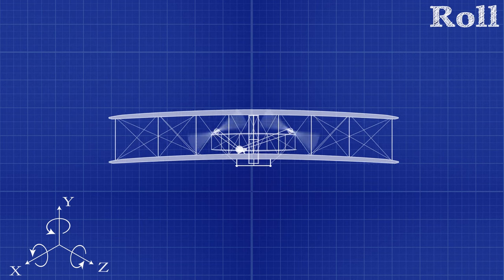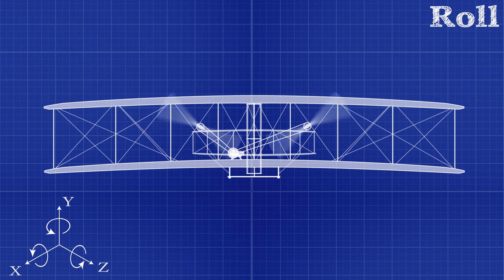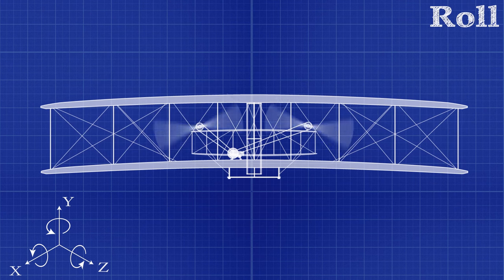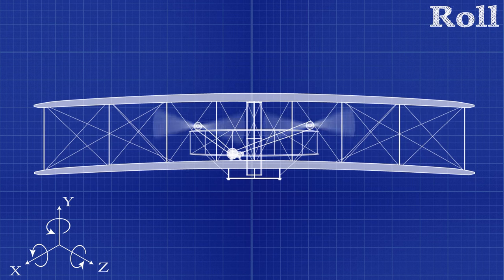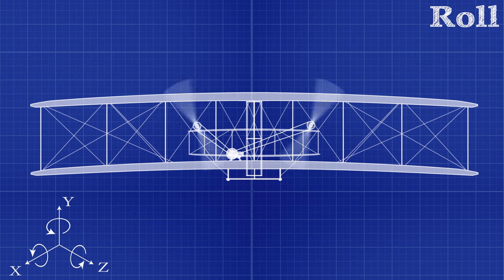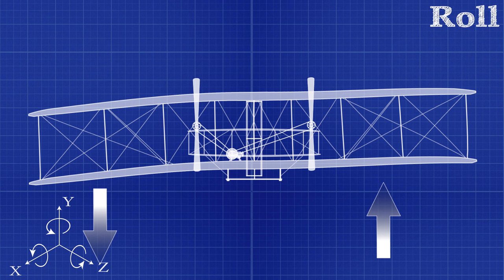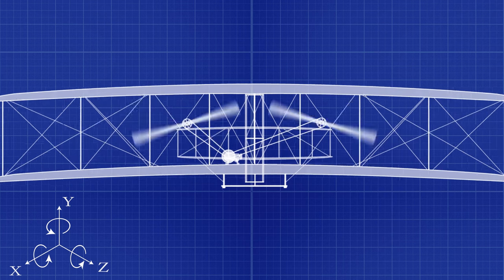Rotation around the X axis is called roll, and the Wright brothers invented an ingenious wing warping mechanism to control it. Using a system of pulleys and wires, the pilot could bend the wings so one side would angle downwards while the opposite side angled upwards, causing an increase in lift on the upward facing side and a decrease in lift on the downward facing side, thus causing a turning moment around the X axis.